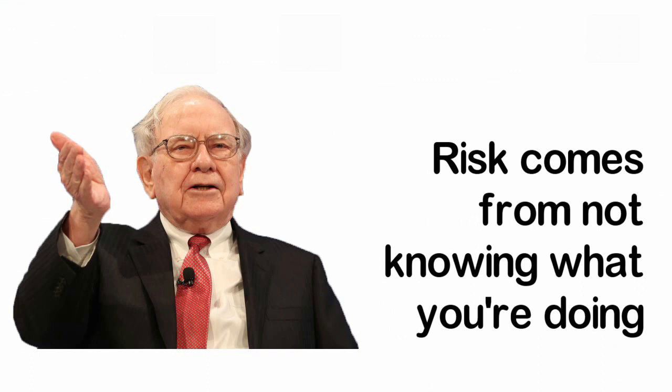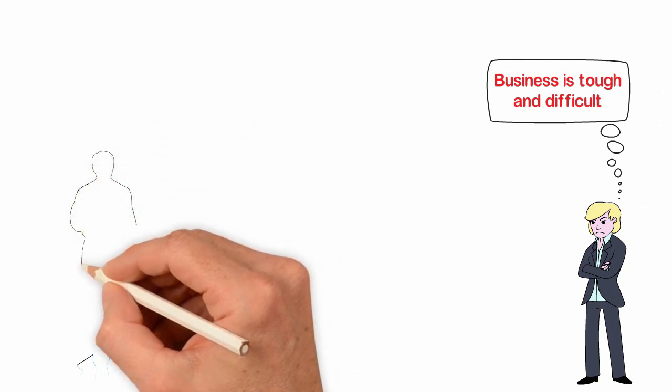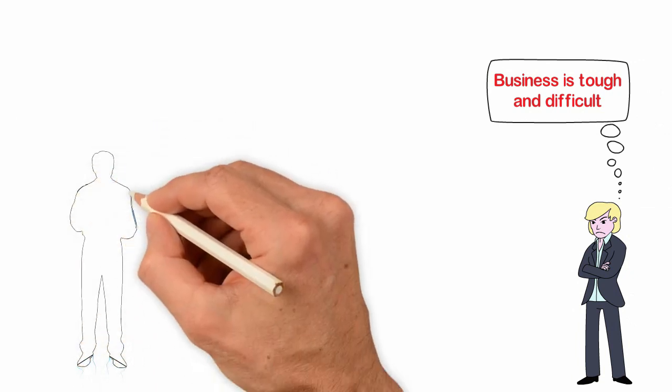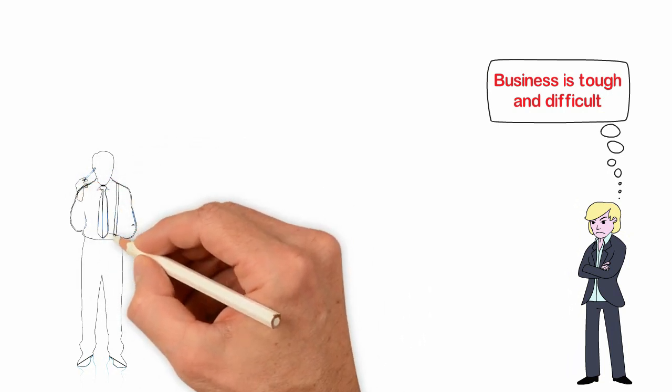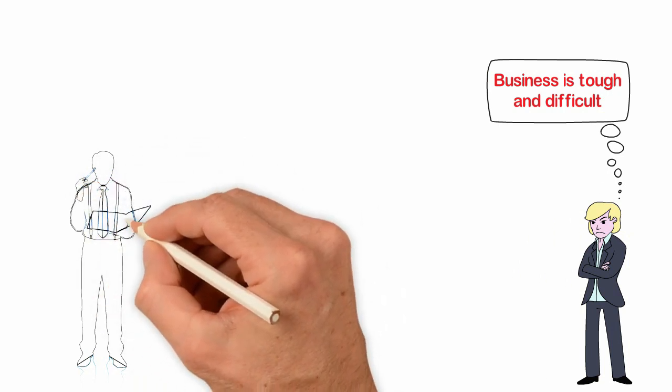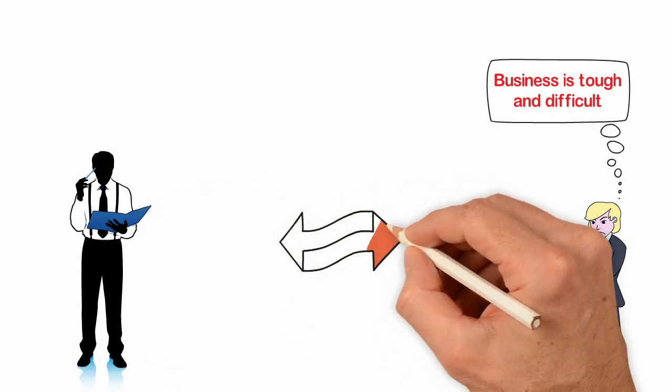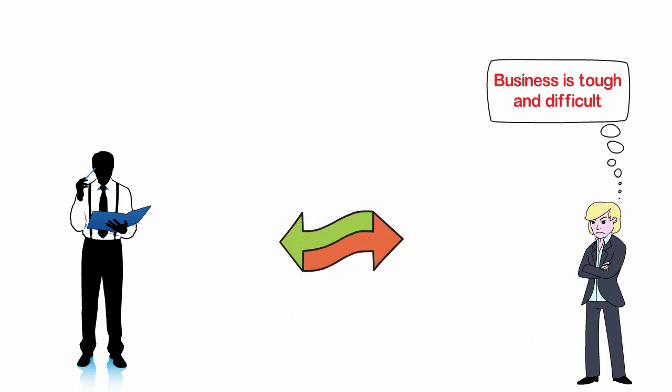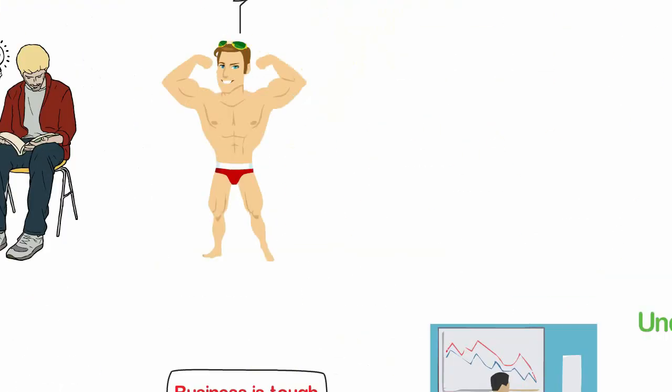Risk comes from not knowing what you're doing. Finally, think about risk the way you think about darkness. Darkness doesn't exist on its own. Instead, darkness is the absence of light. Risk doesn't exist. Instead, it's the absence of knowledge. If you think something is risky, it's because you're ignorant about such a thing. Learn, learn, learn and act. The more you know, the more confident you become and the less risky the journey becomes. Risk comes from not knowing what you're doing.